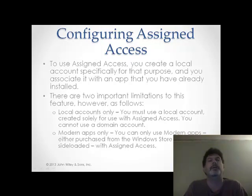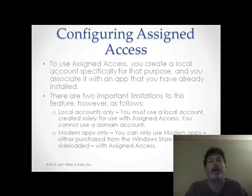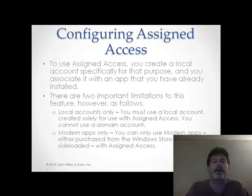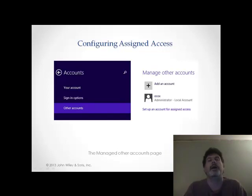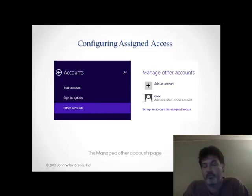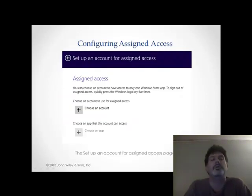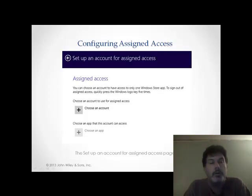In order to do this, you're going to have to create a local account that's going to be specifically used for that purpose, and then associate it with an app that you've already installed. Two things to remember: this only applies to local accounts — you have to use a local account created for this purpose, you can't use a domain account. And last but not least, it has to be a modern app, one of these apps you either purchase from the Windows Store or side-load. You go into your accounts folder, go into other accounts, and it will allow you to set up an account for assigned access. Choose an account — a user account specific to that assigned access that you've already created — then choose an app for that account. By the way, do not use the administrator account for this purpose; you have to have a way to get back into the system to make changes.